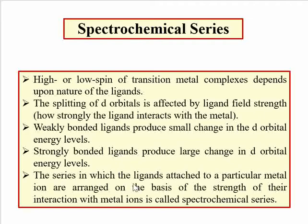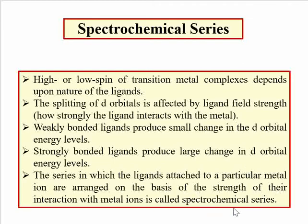So this series tells us about particular ligands — when they are attached to a particular metal atom, the ligands are arranged on the basis of the strength of their interaction with the metal ion. This arrangement is called the spectrochemical series, and it is based on the strength of interaction of the metal ion with the ligands.